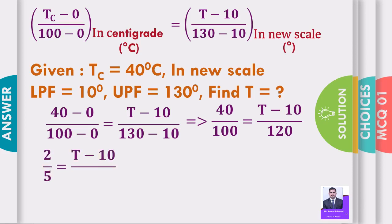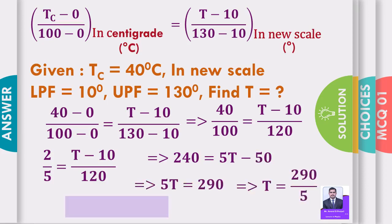2 by 5 is equal to T minus 10 by 120 implies 240 is equal to 5T minus 50 implies 5T is equal to 290 implies T is equal to 290 by 5. That implies T is equal to 58 degree.